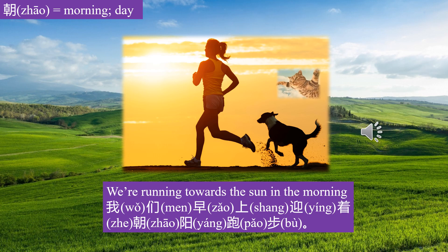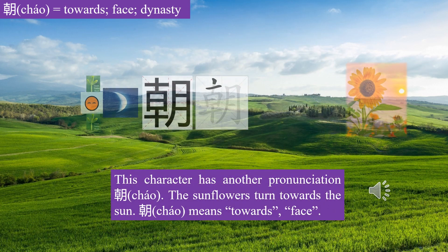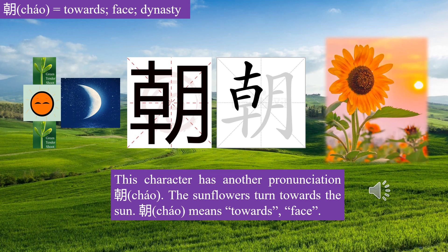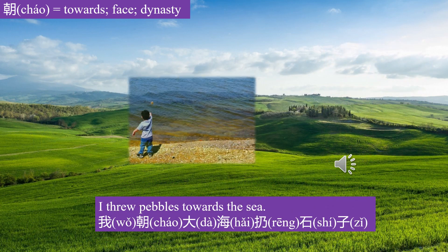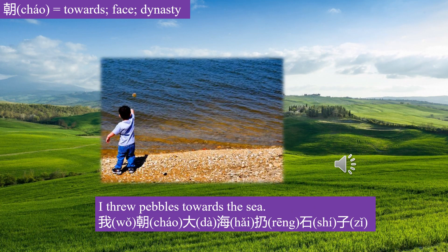I'm flying towards the sun. This character has another pronunciation: Cháo, Cháo. The sunflowers turn towards the sun. 朝 means towards, face. I threw pebbles towards the sea. 我朝大海扔石子。